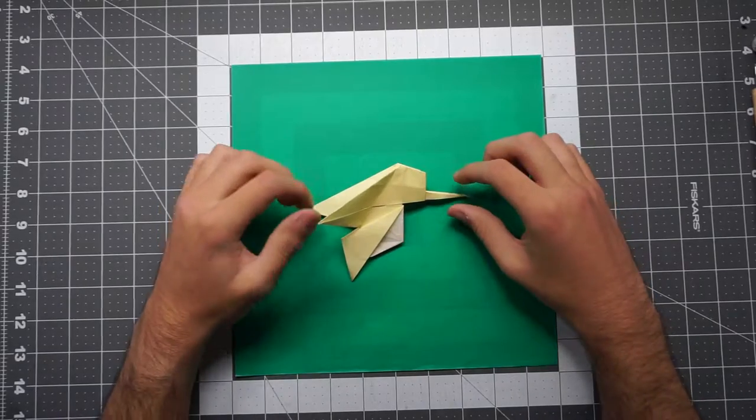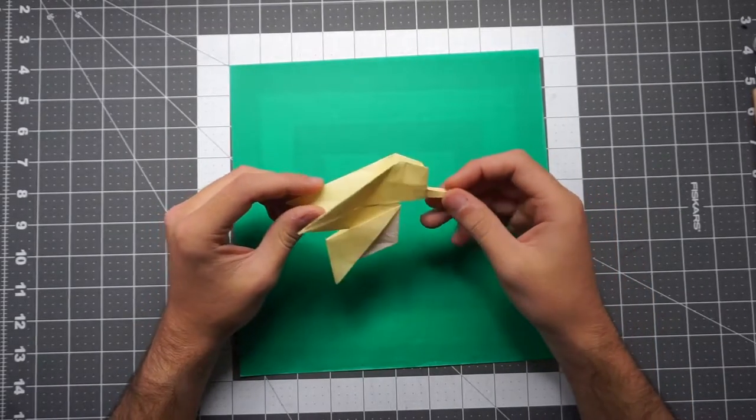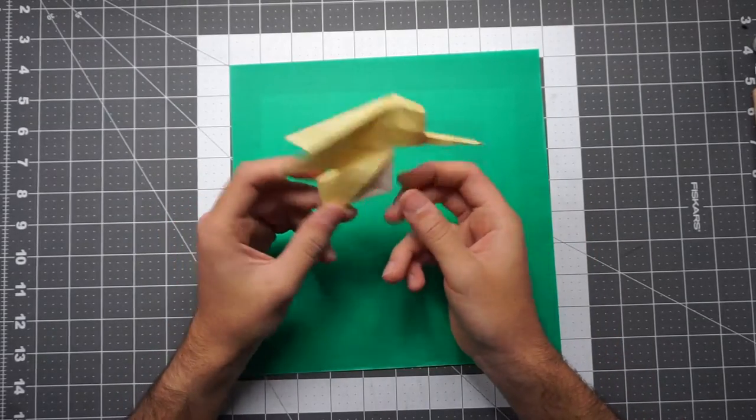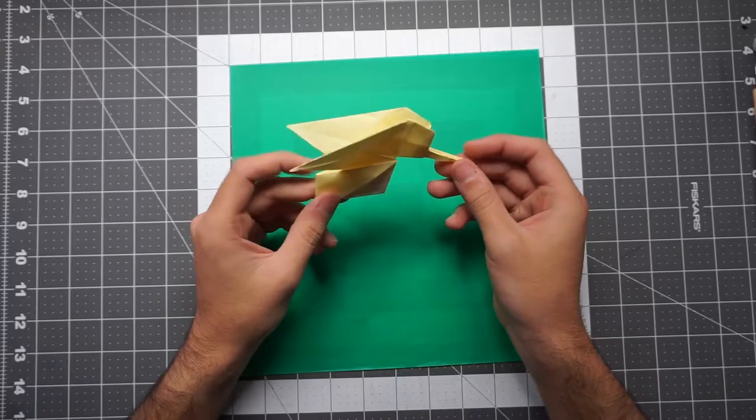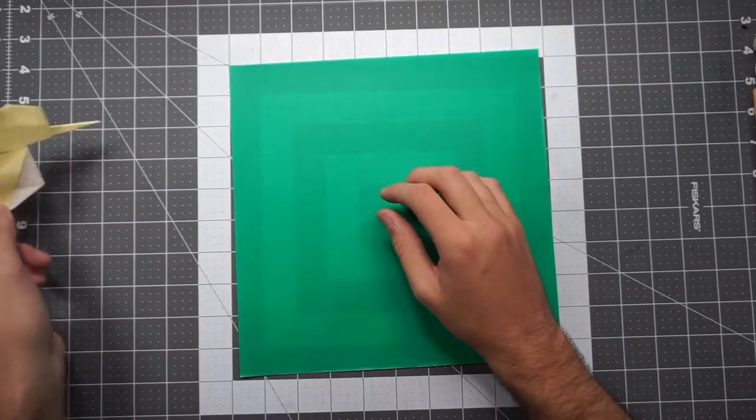Hey everybody, so today I thought I would teach you how to fold a hummingbird. A simple design of my own. This one was made using six inch paper, but we're going to be using about nine inches, it's a bit over nine inches.